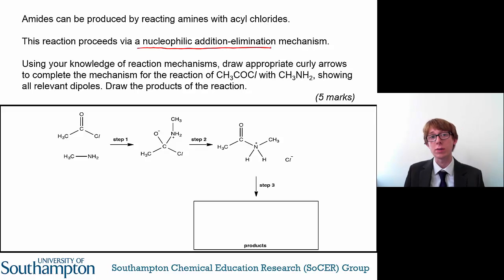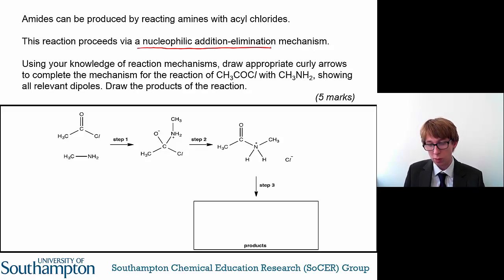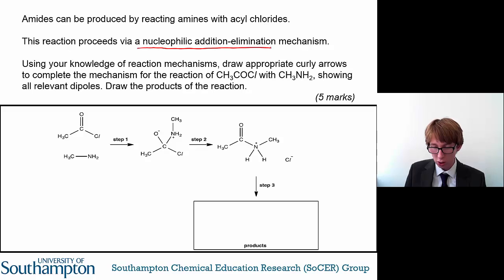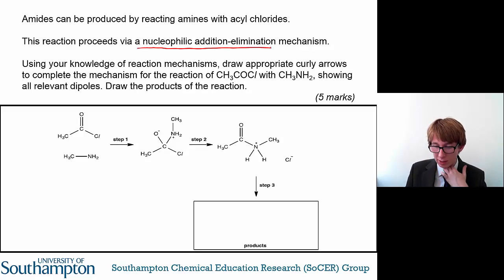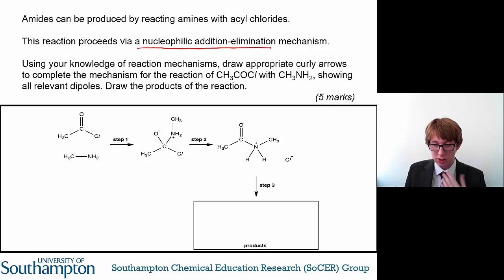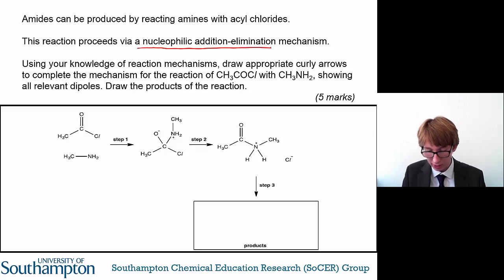So you may not have heard of this before. However, you are asked to use your knowledge of reaction mechanisms to draw appropriate curly arrows to complete the mechanism for the reaction of CH₃COCl — ethanoyl chloride — with CH₃NH₂, that's methylamine. You need to show all relevant dipoles and draw the products of the reaction.